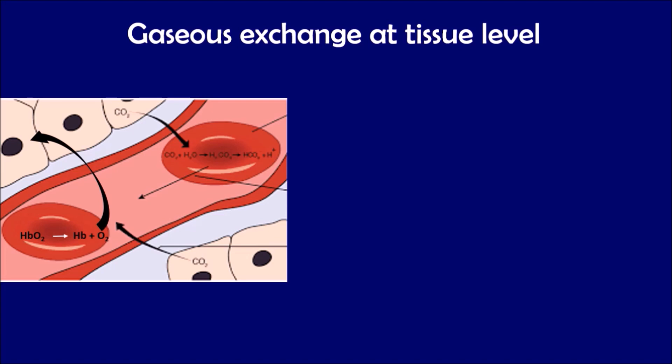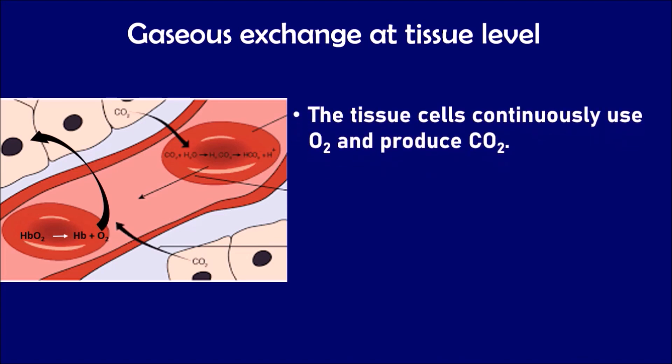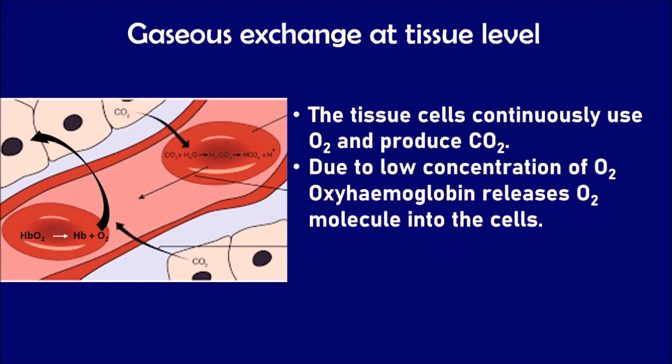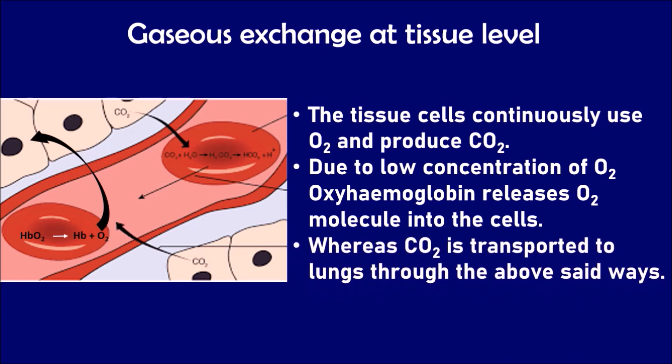Gaseous exchange at tissue level. The tissues at the body parts continuously use oxygen for metabolic activities. Hence, oxygen concentration is low in them, and oxyhemoglobin releases oxygen molecules into the cells. Carbon dioxide, which is produced due to cellular respiration at tissues, is transported as per the gradient to the lungs through the above-mentioned ways.